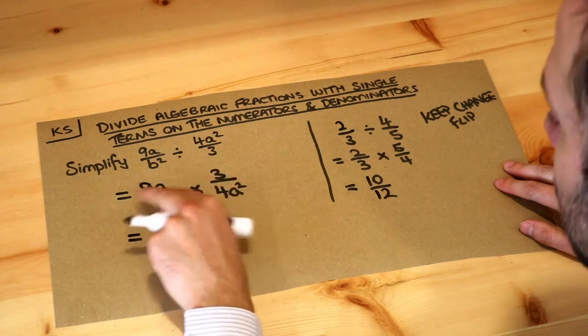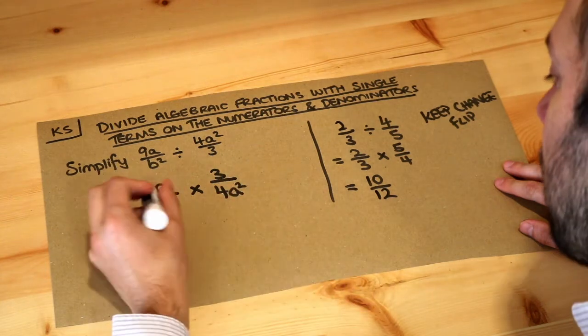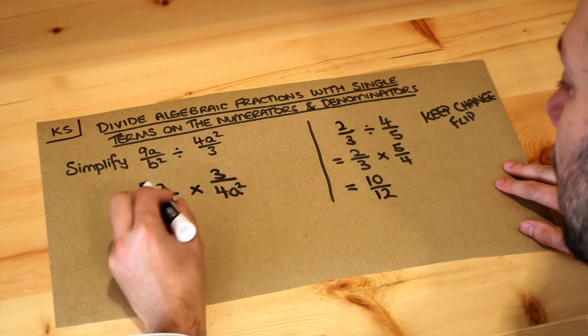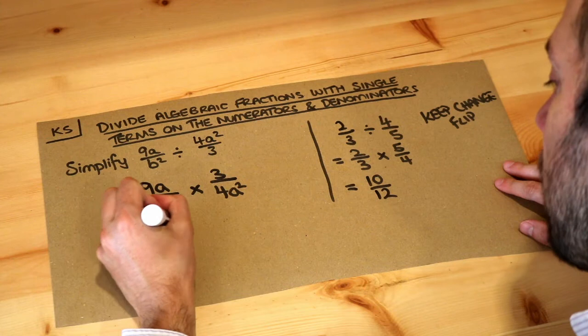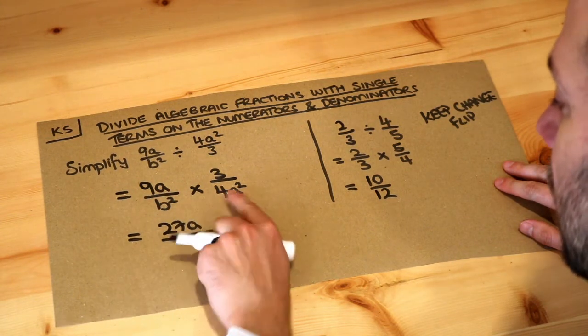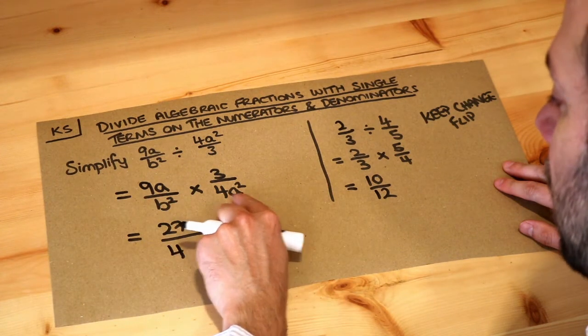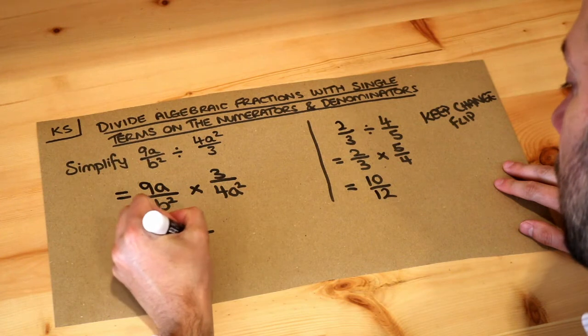Now there's some clever thing we could do with cross-cancelling, but I'm just going to do what we did before, we multiply the numerators. So 9a times 3, well 9 times 3 is 27, so it's 27a. And then b squared times 4a squared, well we've got the 4 first, and then we have the variables in alphabetical order, so the a squared first, then the b squared.